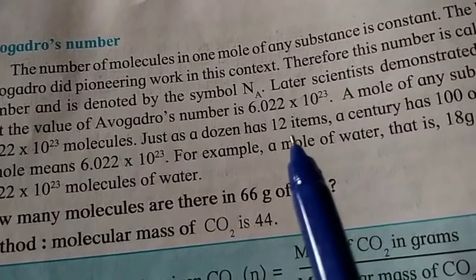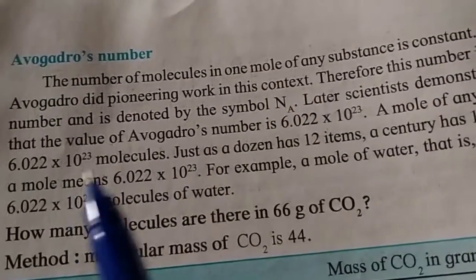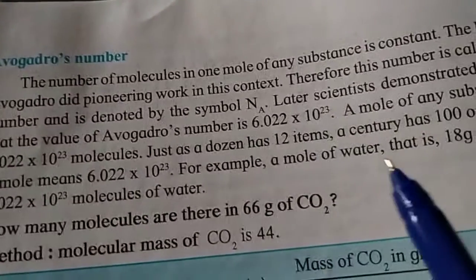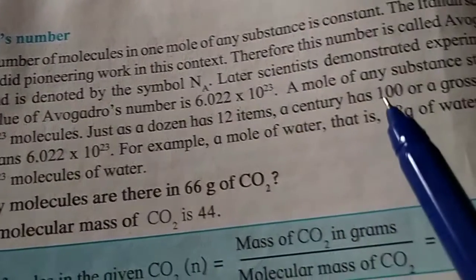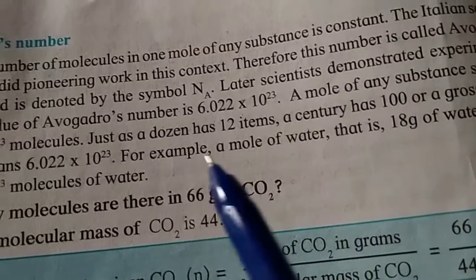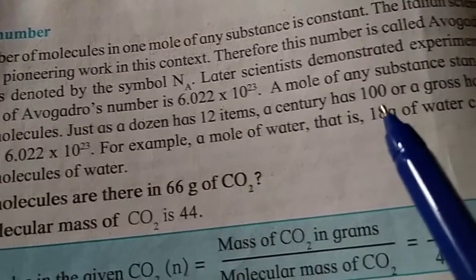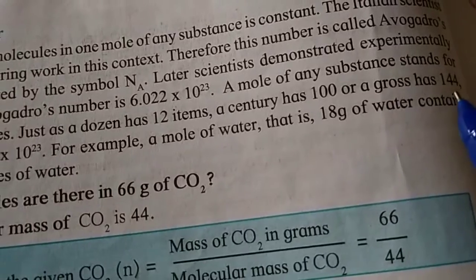You can tell that 1 dozen is 12 items. Similarly, a century has 100, just like dozens have 12 items, a century has 100 or a gross has 144.